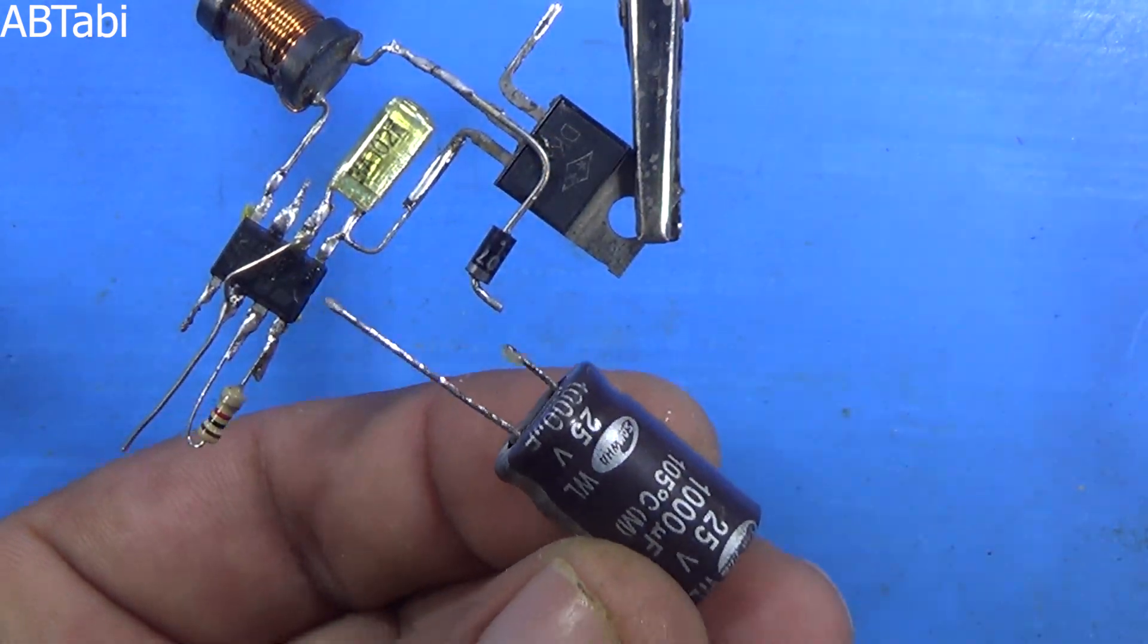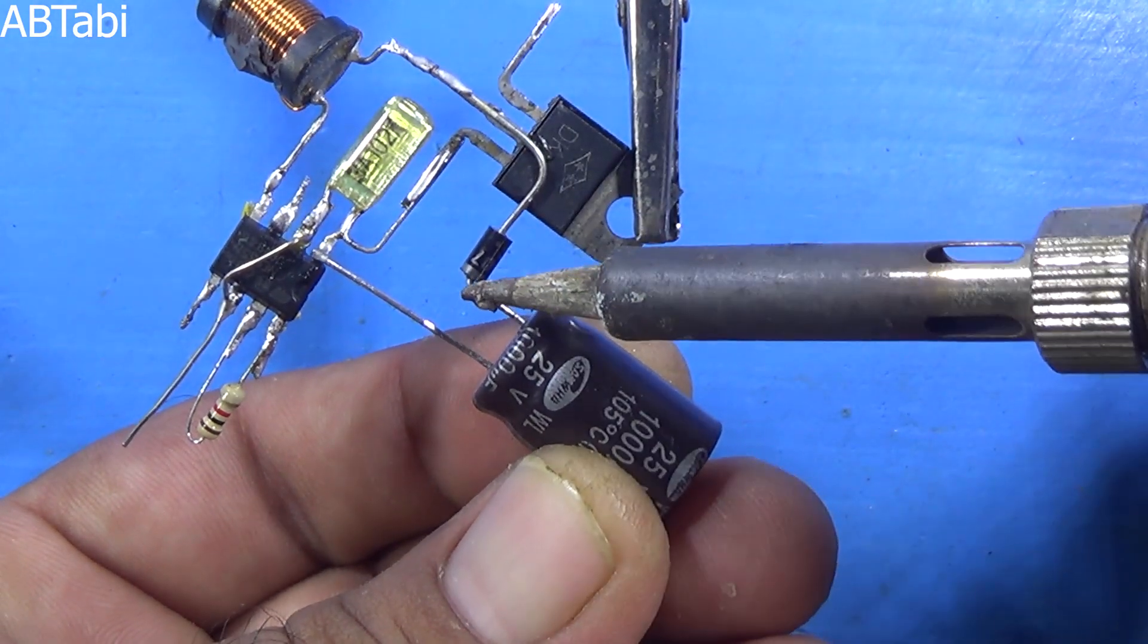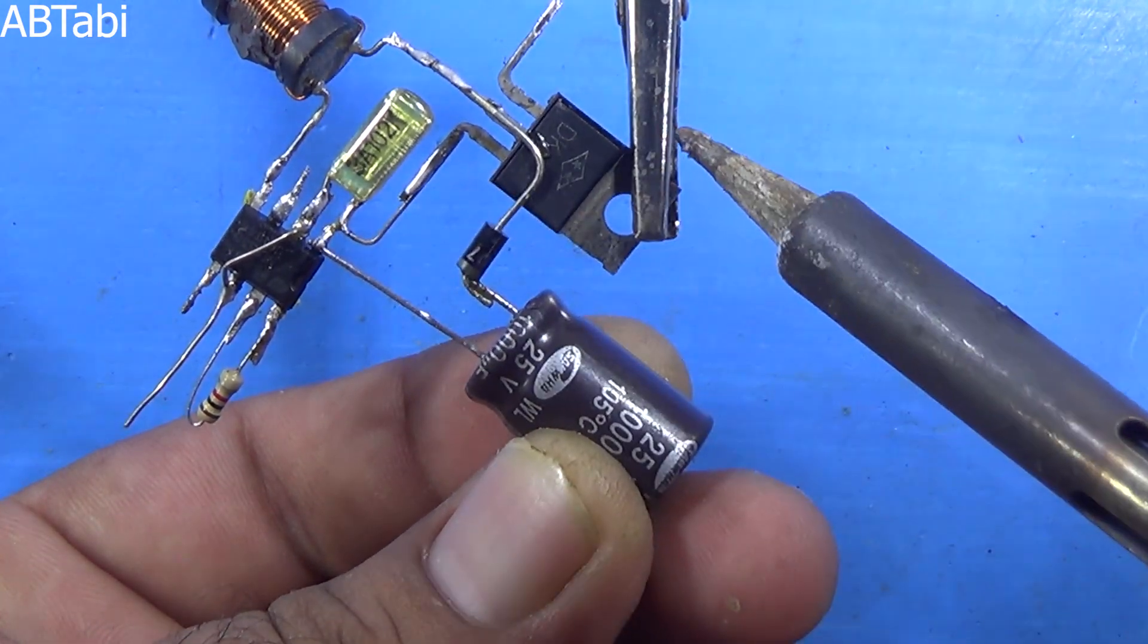1000uF capacitor negative pin connects with IC pin 1 and positive side connects with 4007 diode.